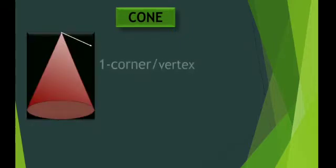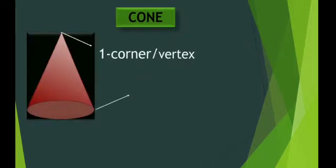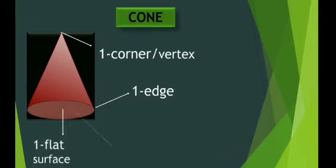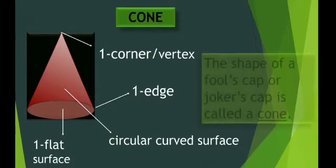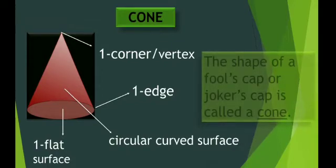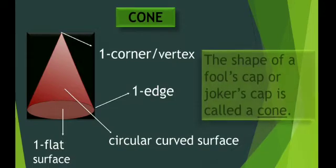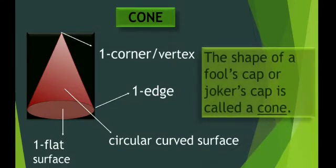Now let us have a look. This is a cone. A cone has one corner or vertex. Next, it has only one edge and one flat surface. It also has a circular curved surface. Now the shape of a fool's cap or joker's cap is called a cone.